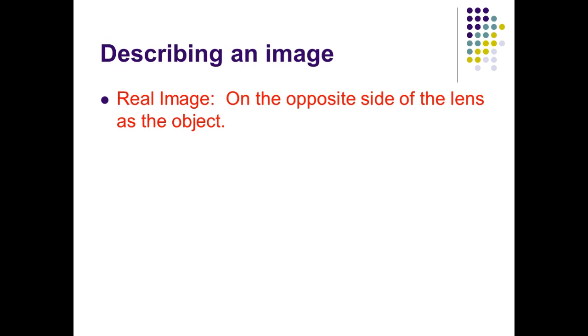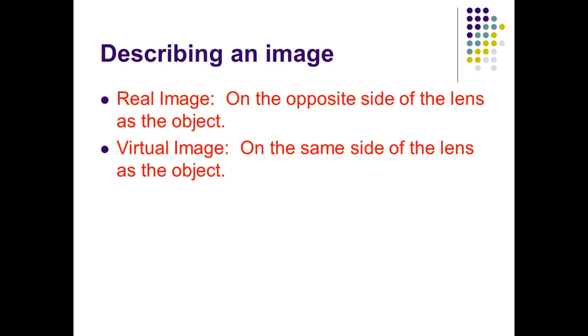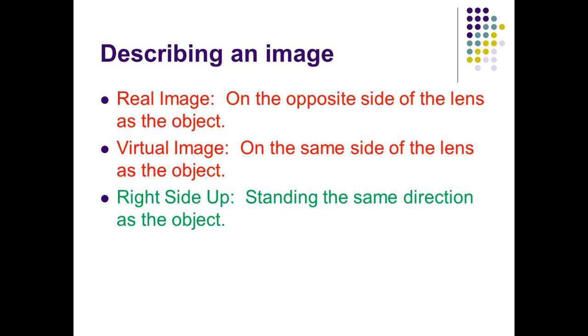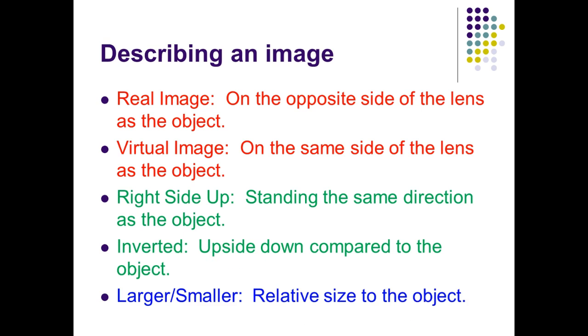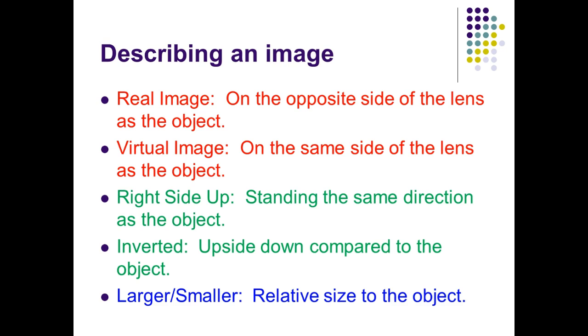When we use a lens to create an image, we need to be able to describe that image. If it's a real image, it's on the opposite side of the lens as the object. If it's a virtual image, it's on the same side of the lens as the object. If it's right side up, it's standing in the same direction as the object. If it's inverted, it's upside down compared to the object. And then we discuss relative sizes — is it larger, smaller, etc.